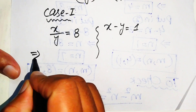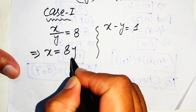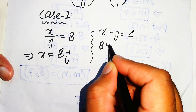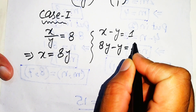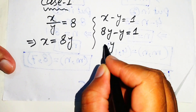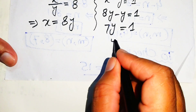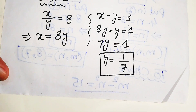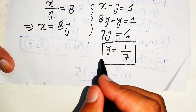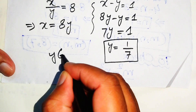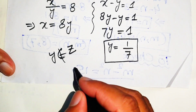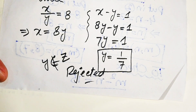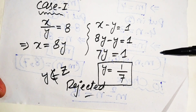Moving y to the right gives x equals 8y. Substituting into x minus y equals 1 gives 8y minus y equals 1, so 7y equals 1, giving y equals 1 over 7. Since y equals 1/7 is not an integer, y does not belong to the integers, so we reject Case 1.